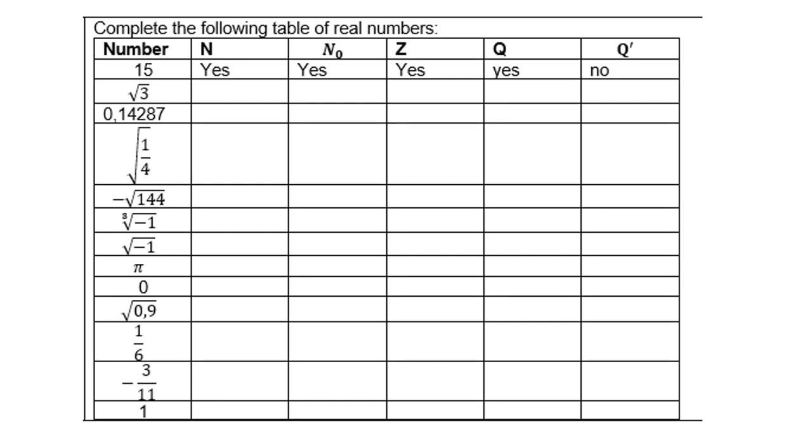Let's look at the example here. Look at the row on top: N for natural, N₀ for whole number, Z, Q, and Q'. Z will be integers, Q will be rational, and Q' will be irrational. Look at 15: Is 15 natural? Yes. Is 15 a whole number? Yes. Is it an integer? Yes. Is it rational? Yes. Is it irrational? No.